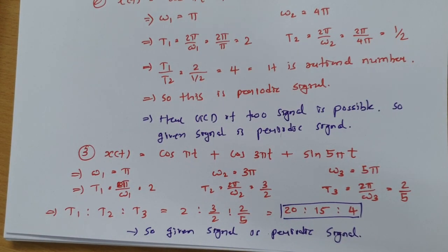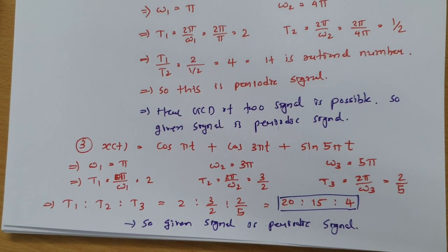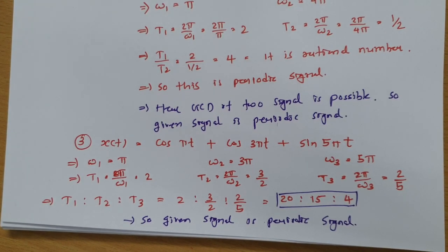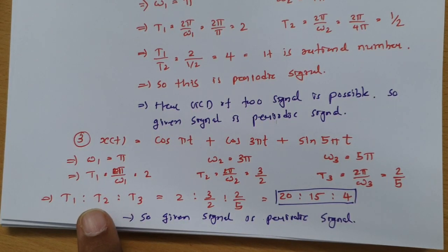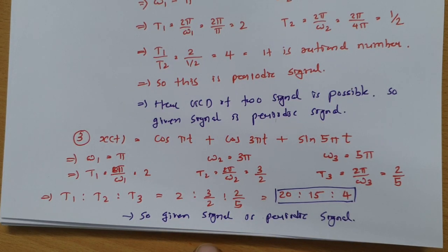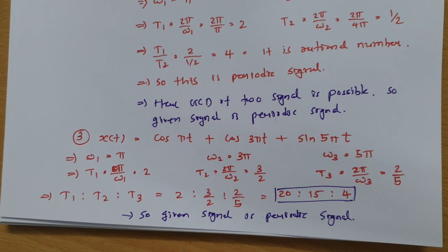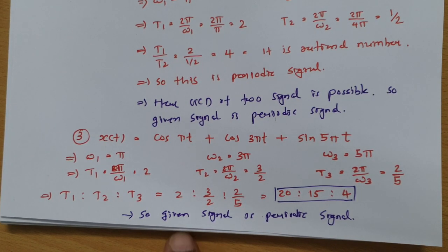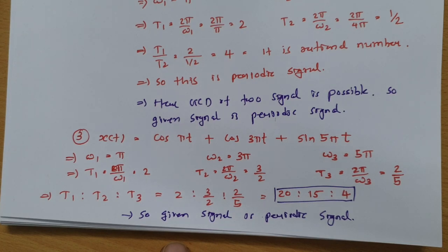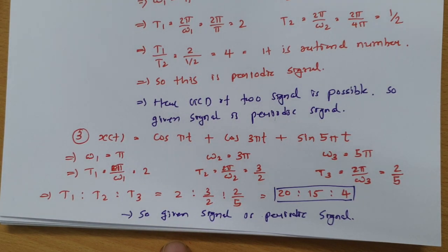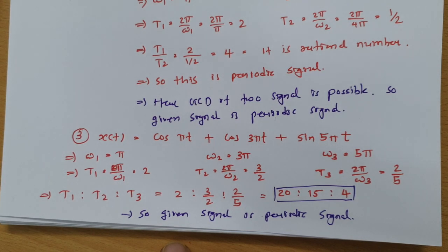I hope you have understood this session. Basically, whenever you have multiple periodic signals being added, we need to check that the time period ratio is a rational number. If it is rational, the resultant signal is periodic. There are two ways to identify this: the rational ratio method and the GCD method. Thank you for watching. Please give your valuable suggestions in the comments, and I will make future videos based on your queries.